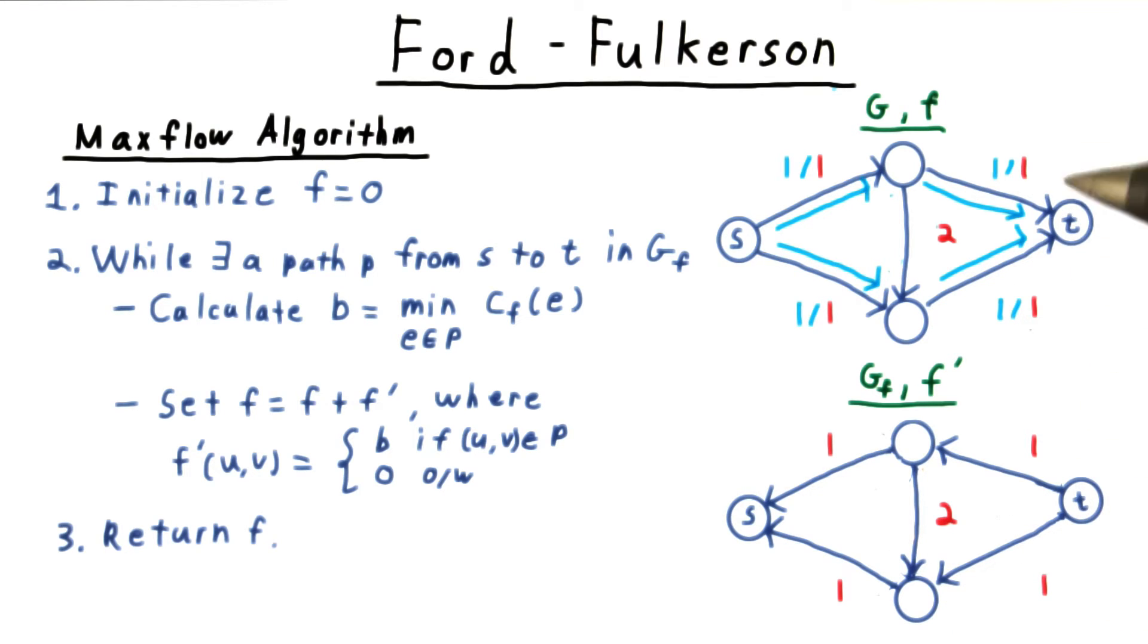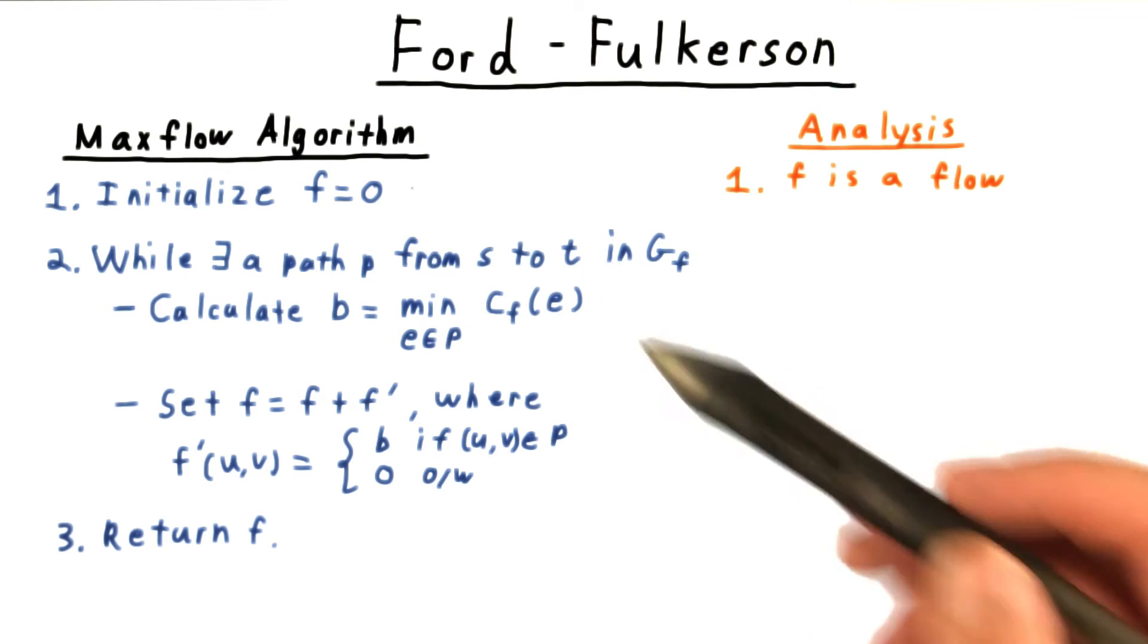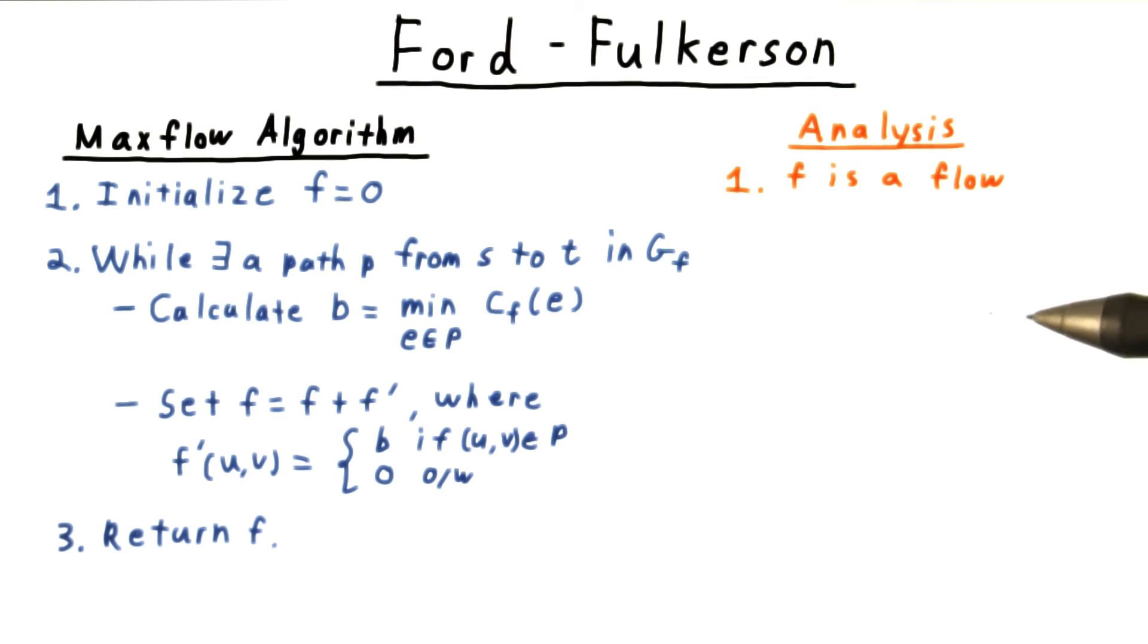Great. And it's easy to confirm that the algorithm worked in this case. But how about in general? First, it's easy to verify that F is indeed a flow. Zero is a flow at the beginning. And at each iteration, we augment the current flow by a flow in the residual graph. And as argued earlier, this is indeed a flow.